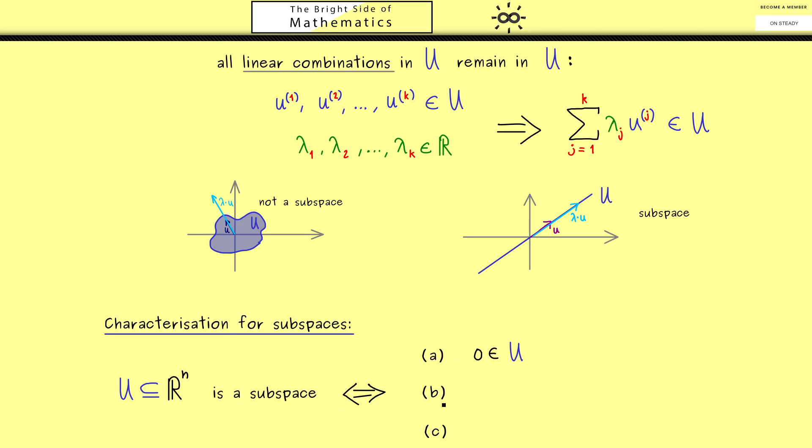Then let's go to the next property, which we have also already discussed, meaning we can scale vectors. More precisely, if we take any vector lowercase u and any scalar λ, then we can conclude that λ times the vector u is also an element of U. Hence we cannot leave the subspace by scaling.